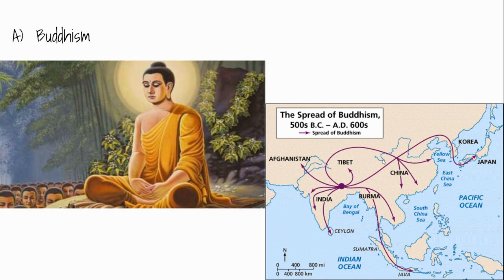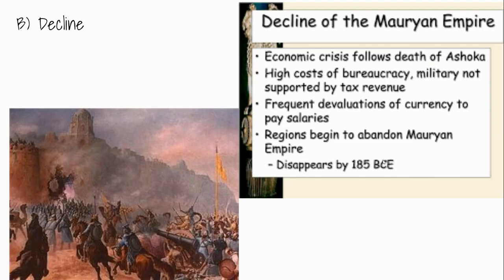Buddhism then spread across Southeast Asia, into China, and into Japan. The teachings of Buddhism differ from Hinduism in that they allow everyone to potentially achieve enlightenment — it's not just the Brahmin class. In Hinduism you have to be a Brahmin to achieve enlightenment, whereas Buddhism democratizes that process and allows everyone to achieve it. There are a number of different types of Buddhism that we don't have time to get into here.